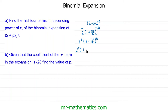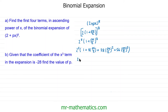Continuing: 8 choice 2 is 28, times (px/2) squared; and 8 choice 3 is 56, times (px/2) cubed. Now 2 to the 8 is 256. Inside the bracket: the first term is 1; 8 divided by 2 gives 4, so 4px; 28 divided by 4 is 7, giving 7p²x²; and 56 divided by 8 is 7, giving 7p³x³. Multiplying everything by 256 gives: 256 + 1024px + 1792p²x² + 1792p³x³.